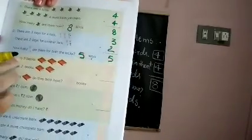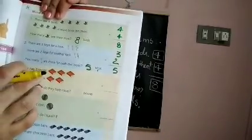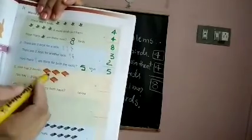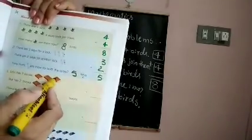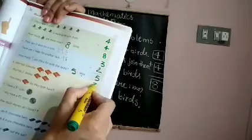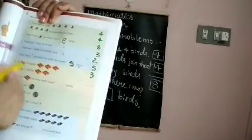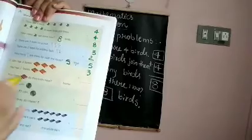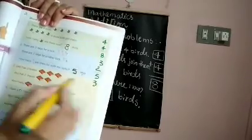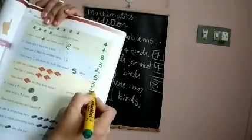Third problem: John has three books — count one, two, three. Write three in the box. His friend Atul has two books — count one, two. Write two in the box.